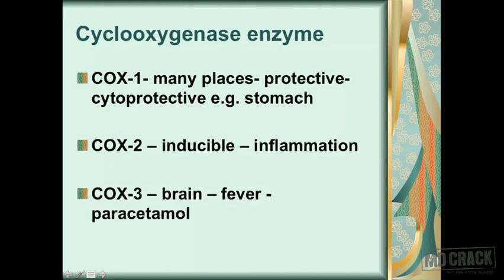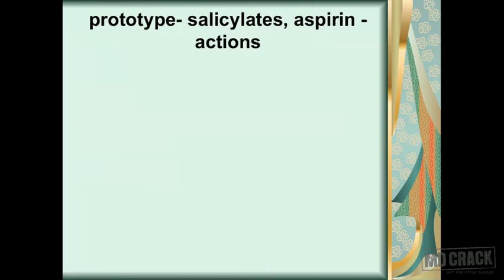COX-3 is a very novel enzyme present in the brain. One current thought is that paracetamol inhibits COX-3, and this is how it decreases fever or decreases body temperature. That is about the cyclooxygenase enzyme and its types.